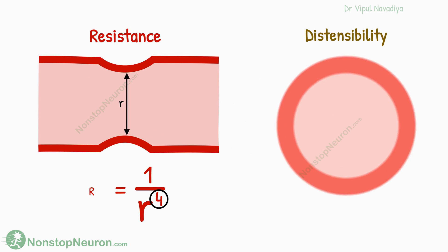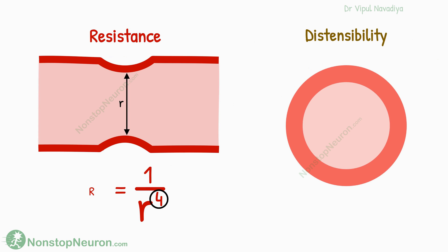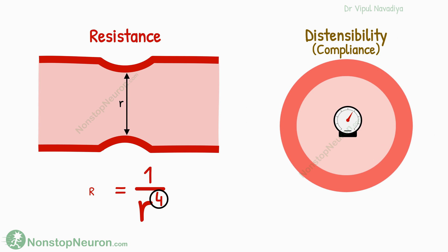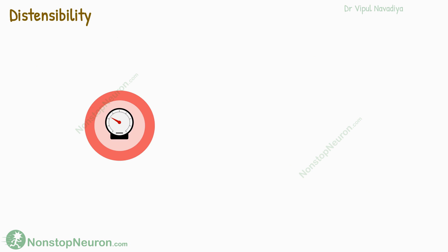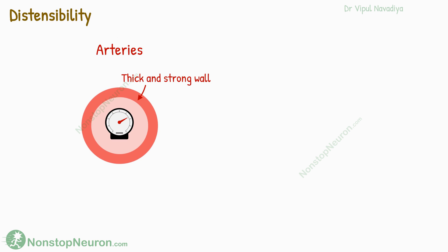One of the factors affecting the radius is the distensibility of the vessels. So let's talk about the distensibility, which can also be referred to as compliance. The elastic nature of the vessel wall allows them to expand when the pressure inside their lumen increases. Now the arteries have a thick and strong wall, so it's less distensible. This means even with a large increase in pressure, it does not expand much.